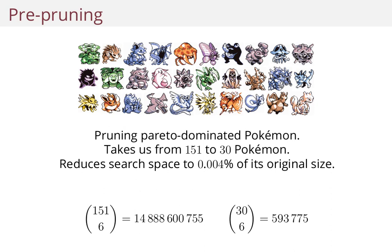So out of 151 Pokemon, it turns out that only 30 are worth considering, because all others are dominated — they are the same type and their total stats is lower. So there's no reason to ever consider the remaining 121 Pokemon.